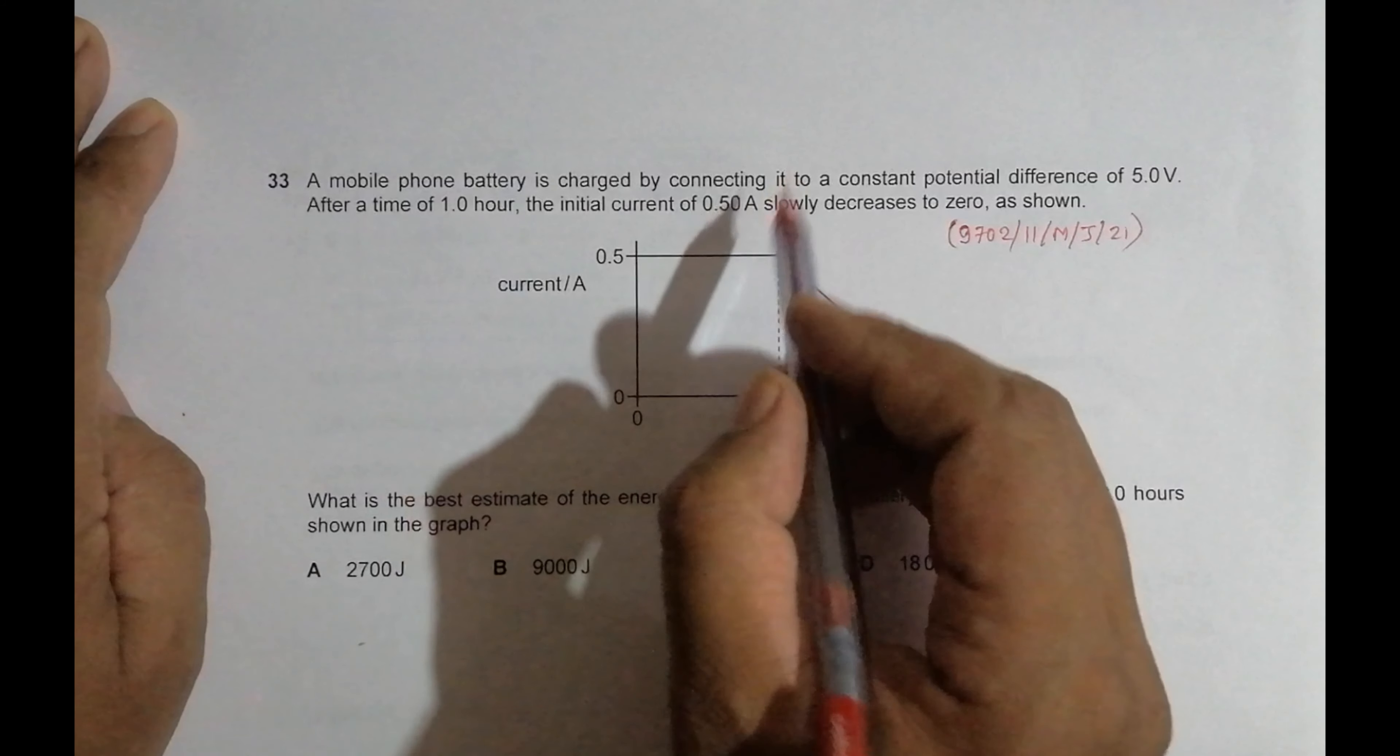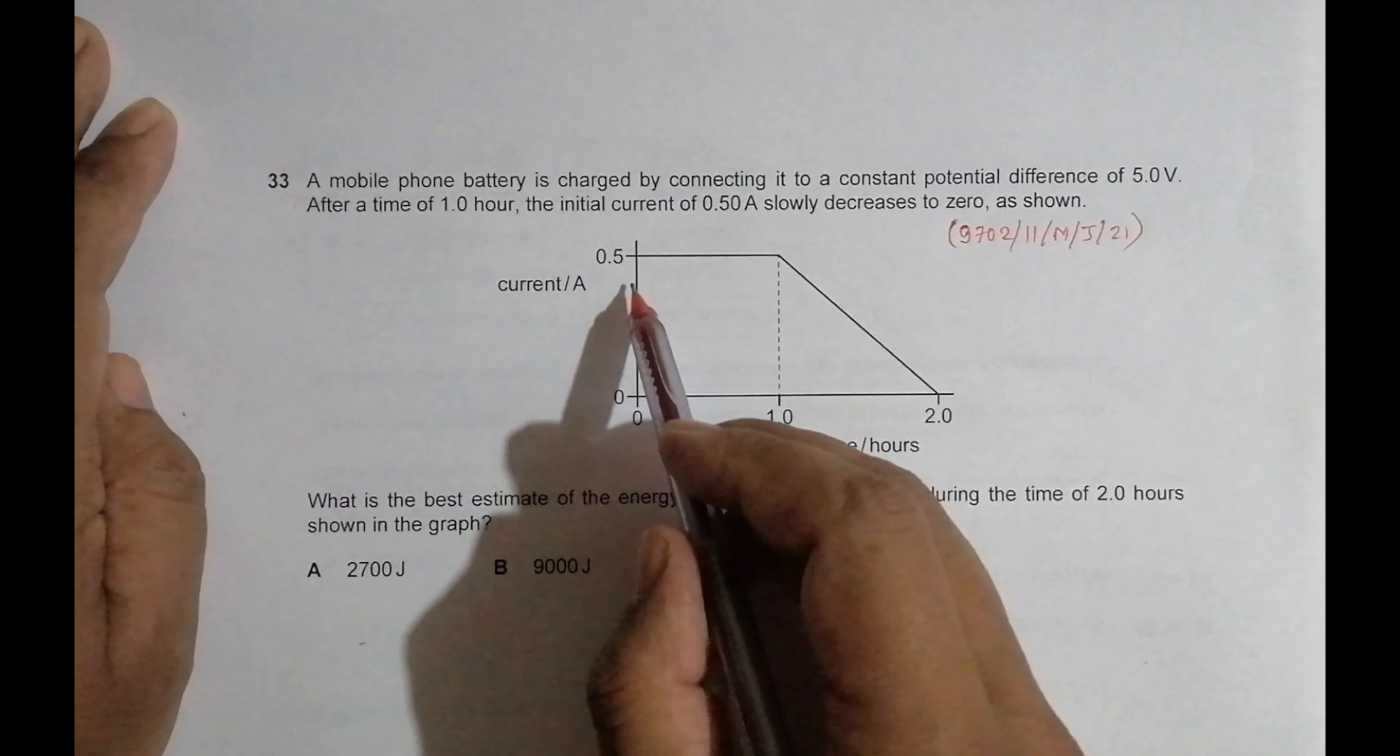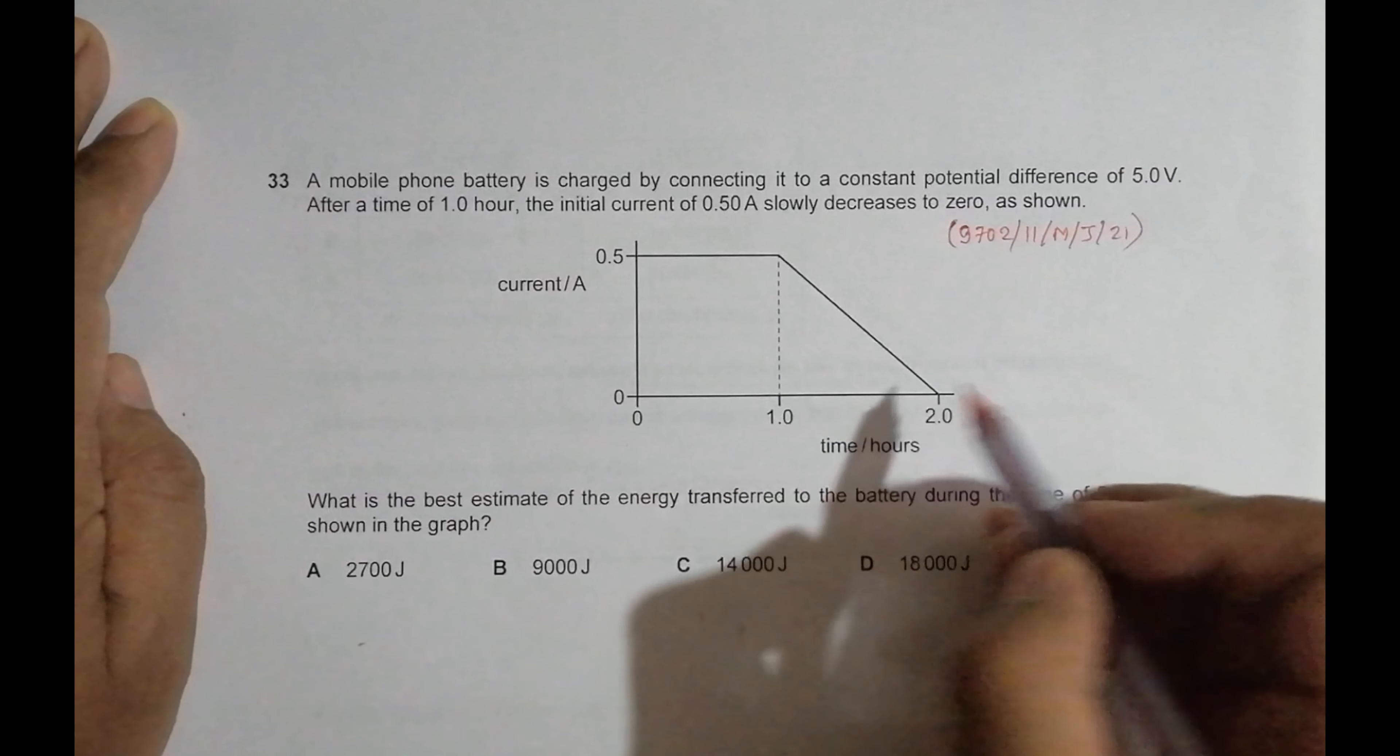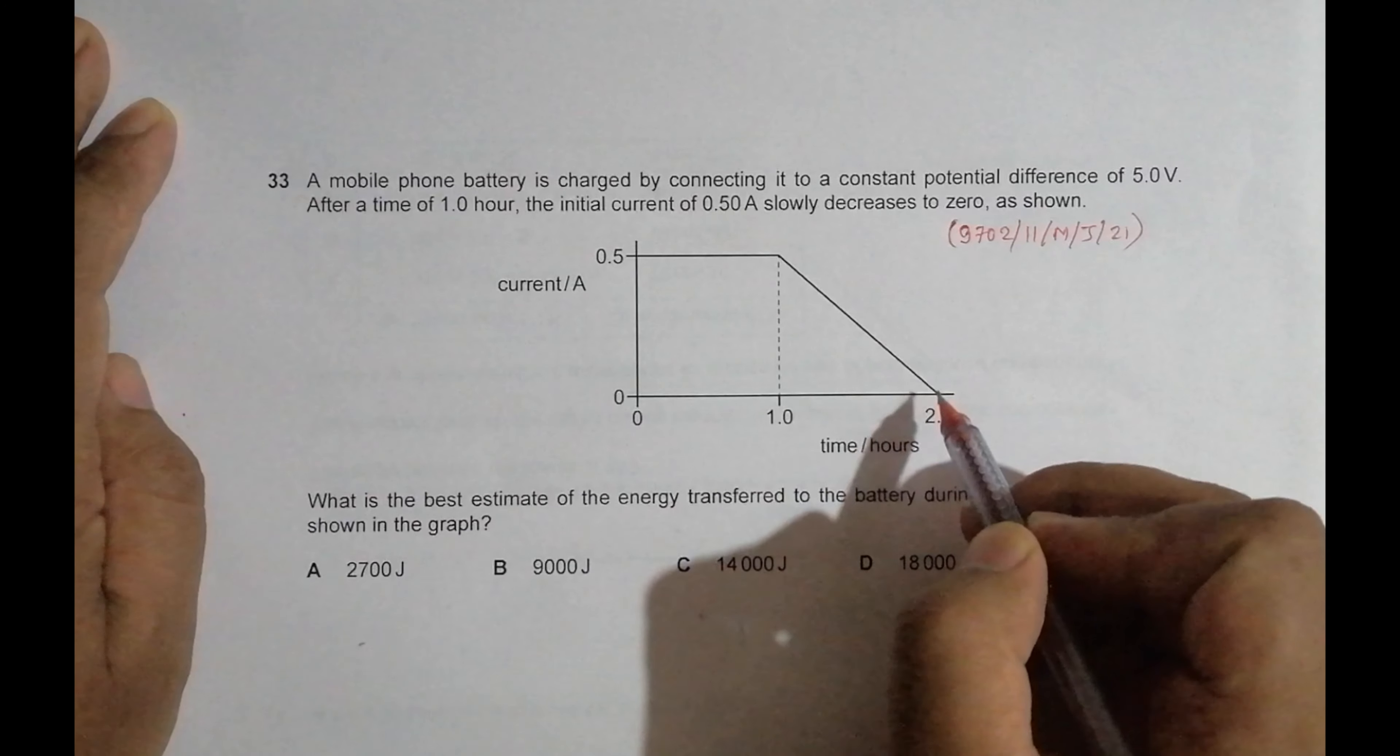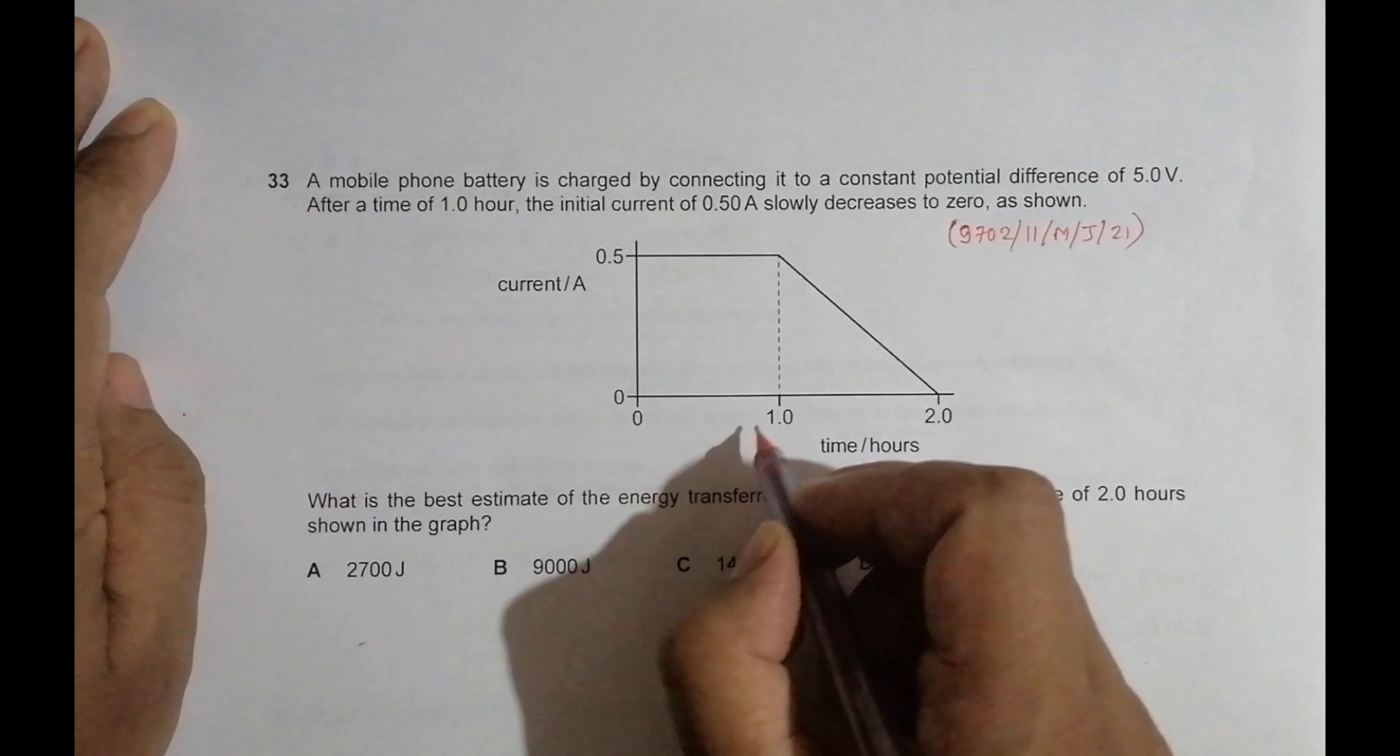initial current of 0.5 amperes decreases to zero as shown. From one hour to two hours it keeps decreasing. Since we have to do the calculations in terms of seconds,